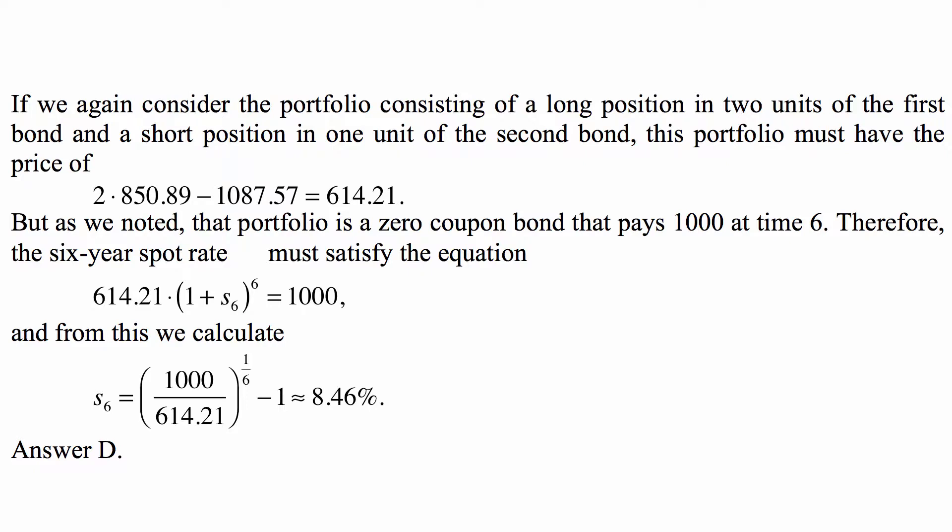But as we noted, that portfolio is a zero-coupon bond that pays 1,000 at times 6. Therefore, the six-year spot rate must satisfy the equation that 614.21 times 1 plus S6 to the sixth, and that S6 is the sixth year spot rate.